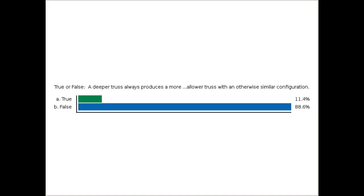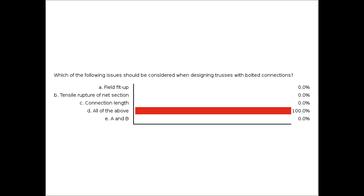Good job everyone. The next polling question: which of the following issues should be considered when designing trusses with bolted connections? A) field fit-up, B) tensile rupture of the net section, C) connection length, D) all of the above, or E) answers A and B only.